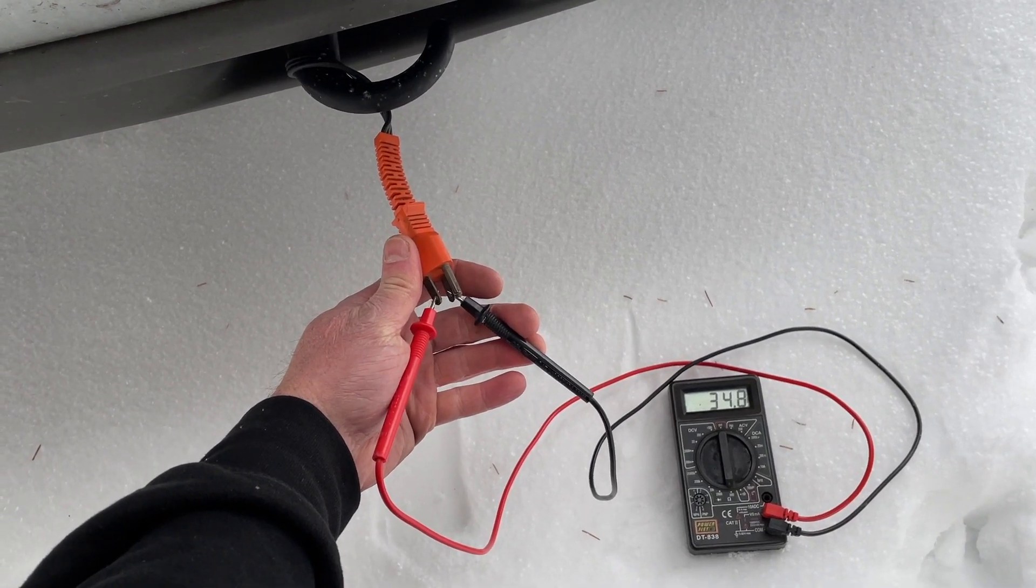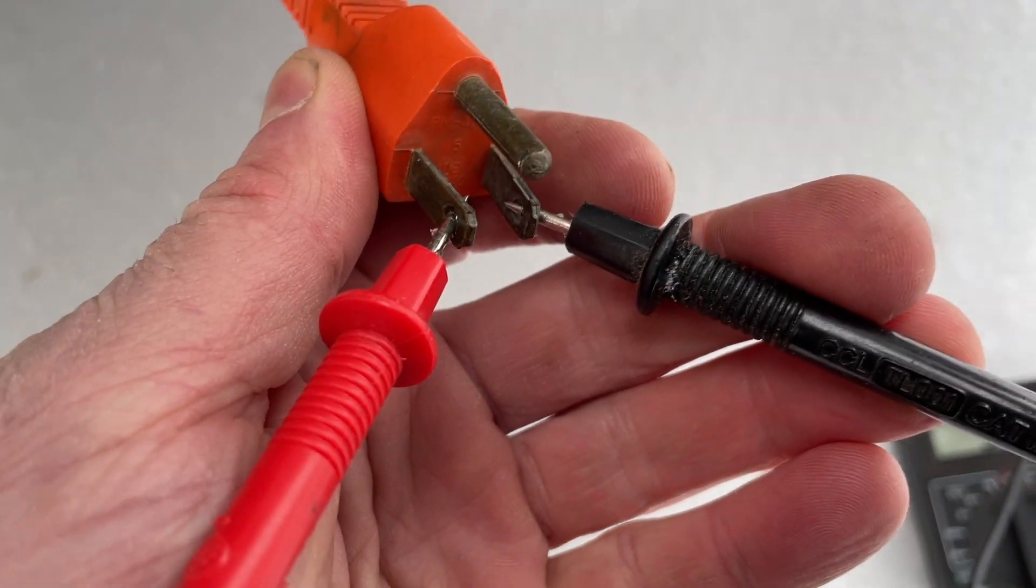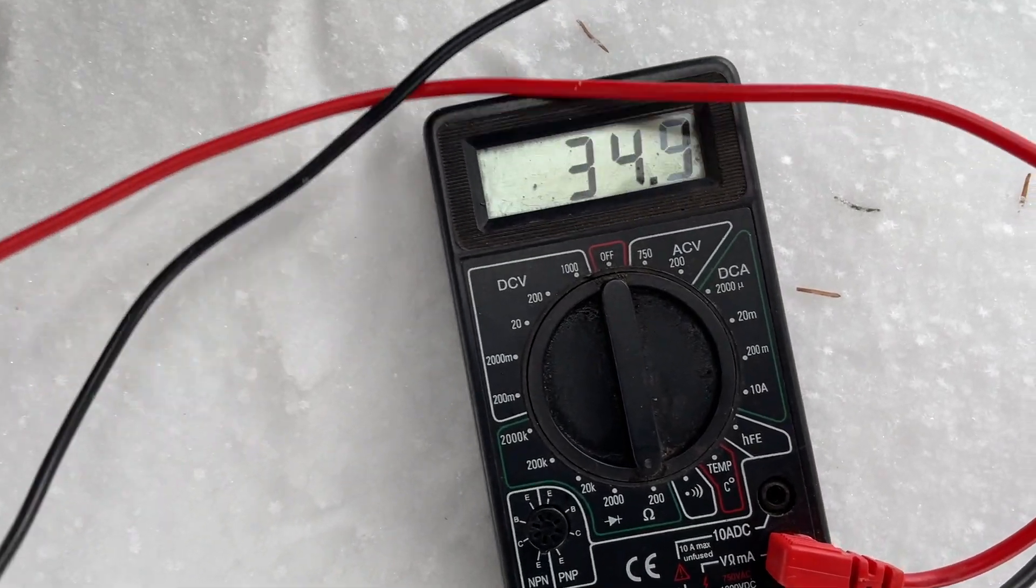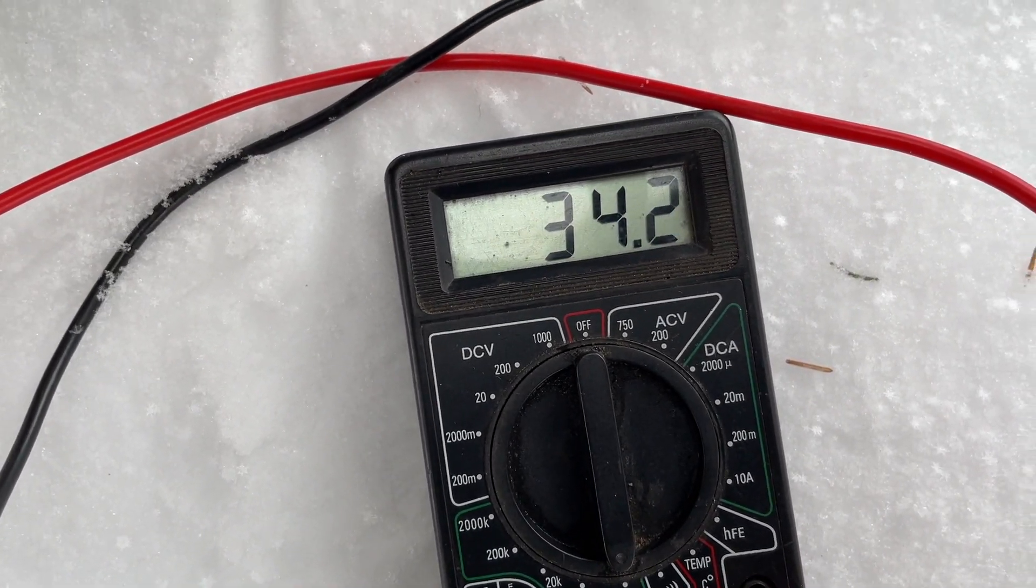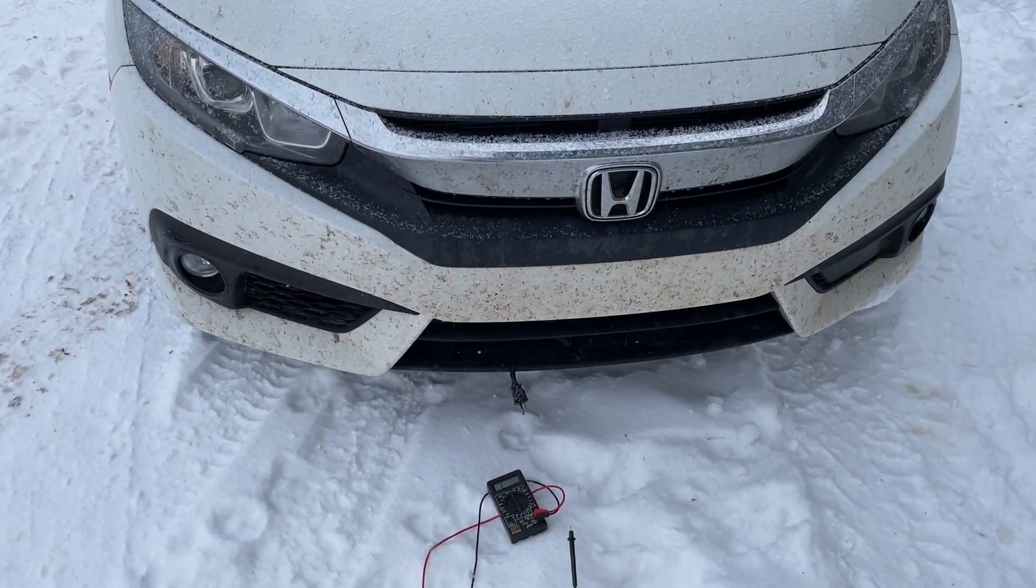On my Chev Tahoe the resistance is about 34.4 ohms. On my Honda Civic it also reads about 34 ohms.